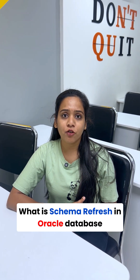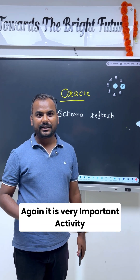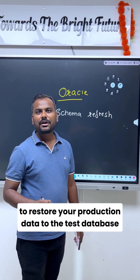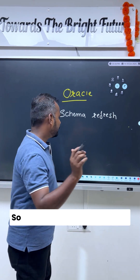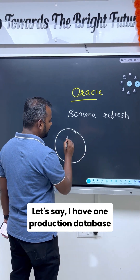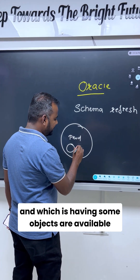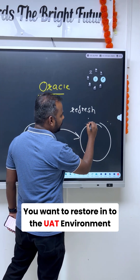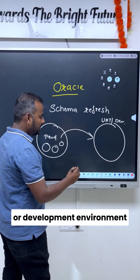What is schema refresh in Oracle Database? Schema refresh is a very important activity. The main purpose of this activity is to restore your production data to the test database. For example, if you have a production database named 'prod' which has some objects, you want to restore those objects to the UAT environment, which is your testing or development environment.